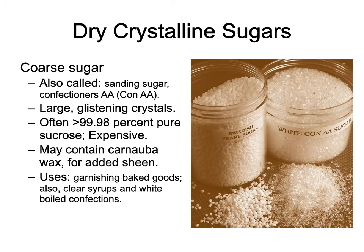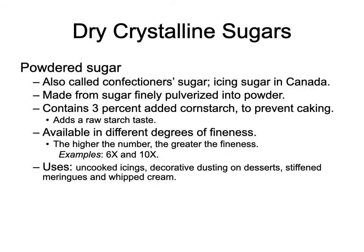There are coarser sugars like sanding sugar and confectioners double-A. Pearl sugar from Sweden is very popular on brioche and sprinkled on croissants — it's often very pure and expensive because it's specially made. You can see from the photograph how very different it looks. Even though it costs more, since it's used as a garnish, it adds a lot of visual appeal to baked products.